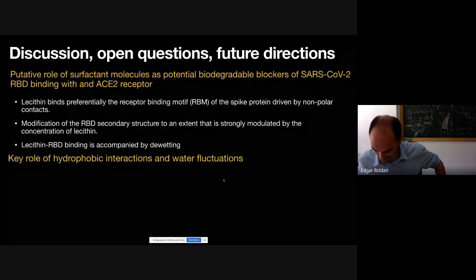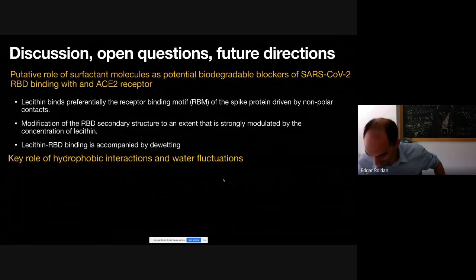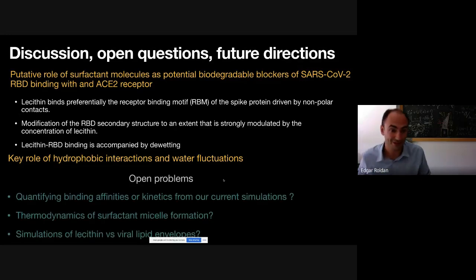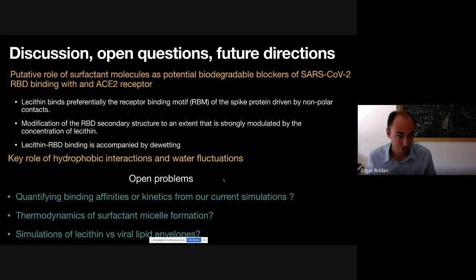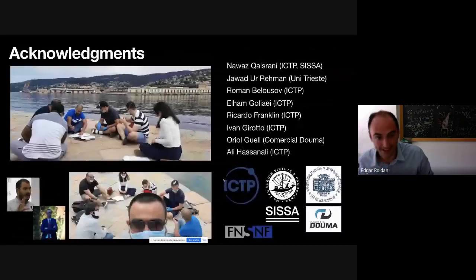These are the conclusions: lecithin plays a significant role in blocking the spike protein, achieved through hydrophobic interactions combined with the dewetting effect we discussed. Open problems that have also come up during this talk include simulating the dynamics of lecithin near the lipid envelope of the virus — something we would like to get feedback on.